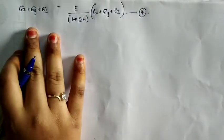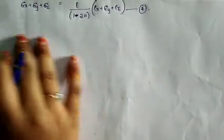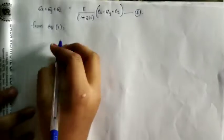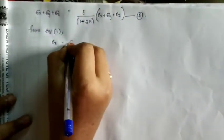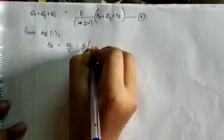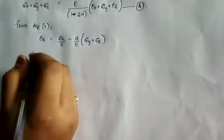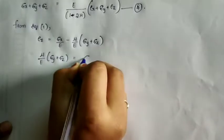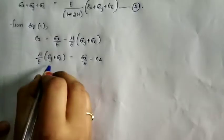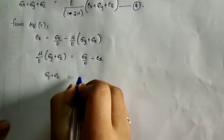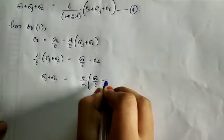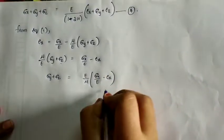Now we need to express sigma x, sigma y, sigma z in terms of strains. From Equation 1: epsilon x equals sigma x by E minus mu by E into (sigma y plus sigma z). Rearranging, mu by E into (sigma y plus sigma z) equals sigma x by E minus epsilon x. Therefore, sigma y plus sigma z equals E by mu into (sigma x by E minus epsilon x). This is Equation 5.